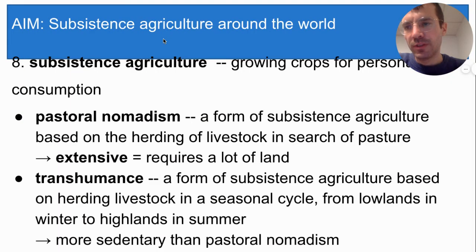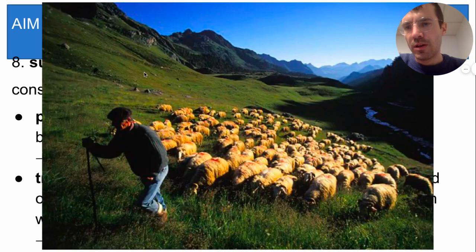Similar to pastoral nomadism is another form of subsistence agriculture called transhumance. Transhumance involves herding animals seasonally from lowlands in the winter to highlands or mountains in the summer. Usually one or two men known as shepherds will take a large group of animals into the mountains to graze in the summer, while the rest of their family remains in a village growing crops. Once summer is over, the shepherds bring the animals back down into the lowland village where they spend the winter. Here's a picture of a shepherd in France taking his sheep into the mountains in the summertime. This shepherd will spend the entire summer up in the mountains alone with just his sheep, then in the fall or winter he'll return to his family.